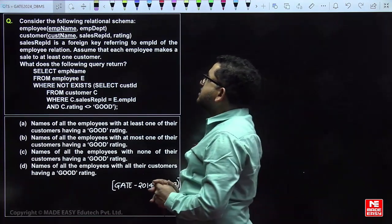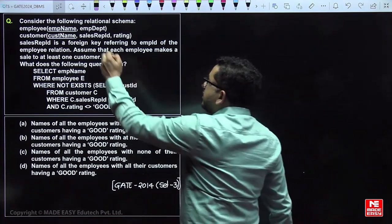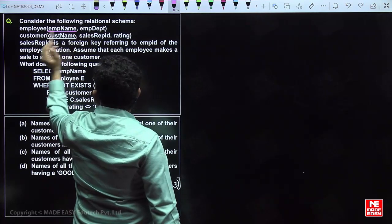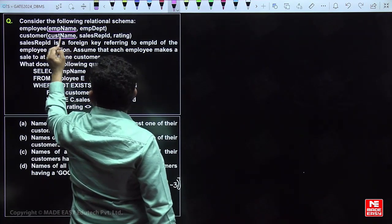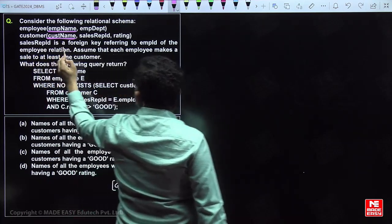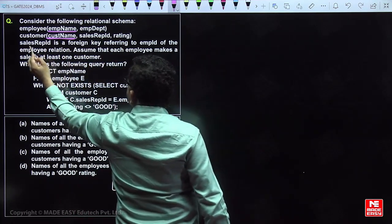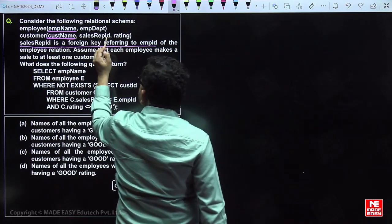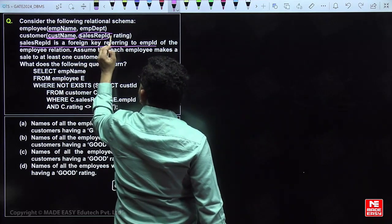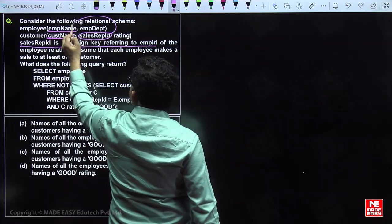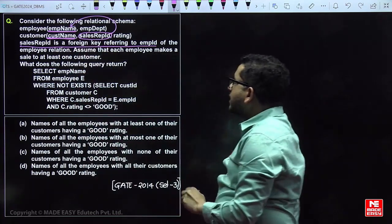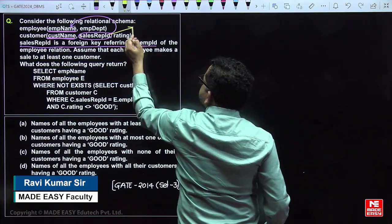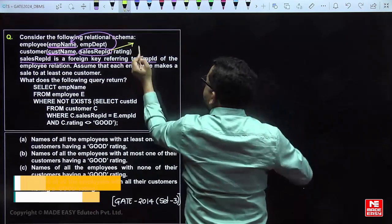Consider the following relational schema: employee_name is the primary key for the employee relation, and customer_name is the primary key for the customer relation. The sales_representative is a foreign key referencing employee_id. This means the sales_representative_id is a foreign key referring to employee_name — that is, the sales representative is also an employee of the employee relation.